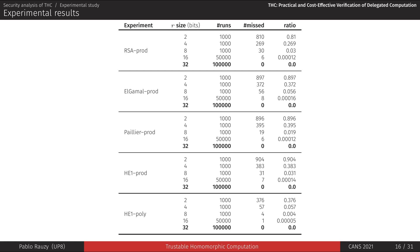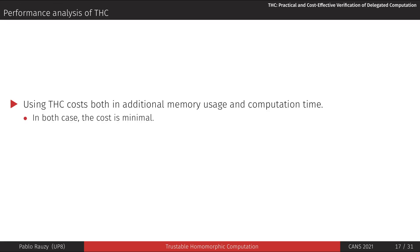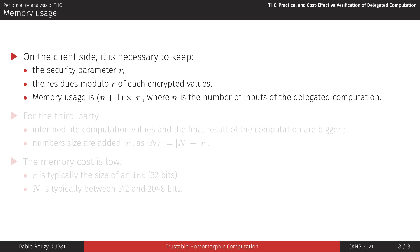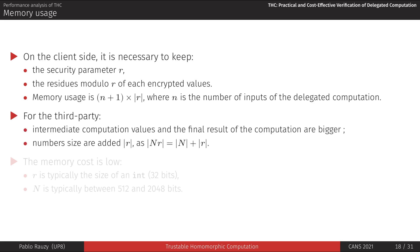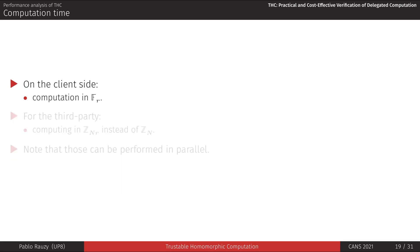The next question is performance. We wanted to show that the cost of using THC is really small, both in terms of memory usage and computation time. On the client side, we have to keep the value of R and the residues modulo R of each encrypted value used in the computation, so memory usage is linear in the number of encrypted inputs. On the third-party side, intermediate values and the final result are bigger, but proportionally not so much — in practice R will be chosen the size of a machine word, while N is much bigger.